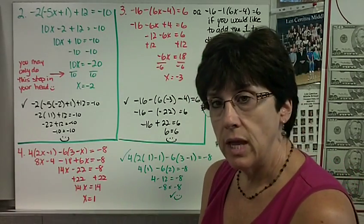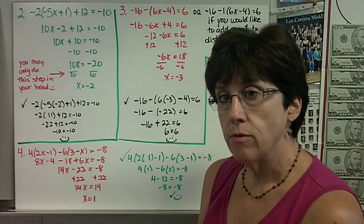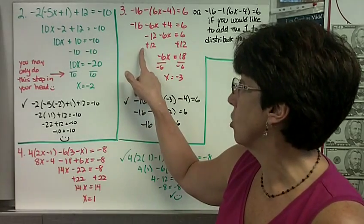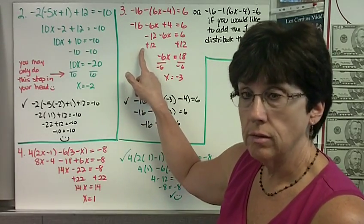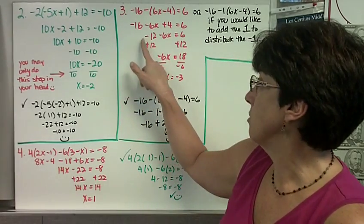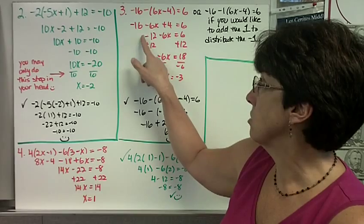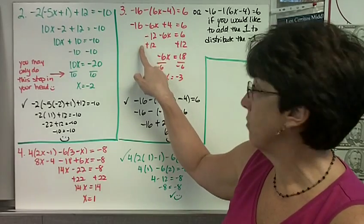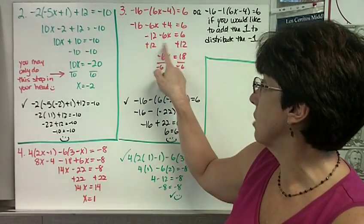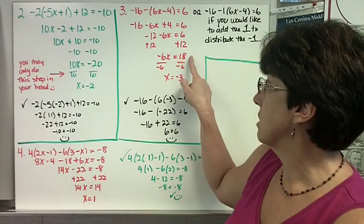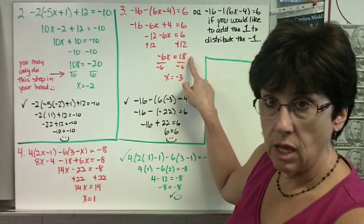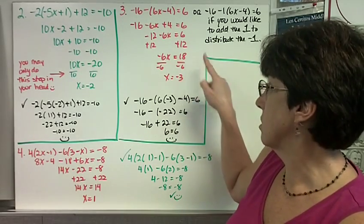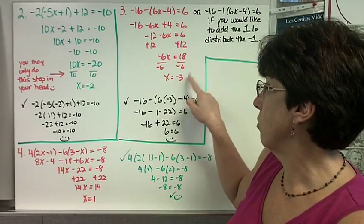Notice this time the constant term comes before the x term — that's okay. I'm still going to do the inverse. The inverse of subtract 12 is add 12, so I add 12 to both sides. Negative 6x equals 18, and x equals negative 3.